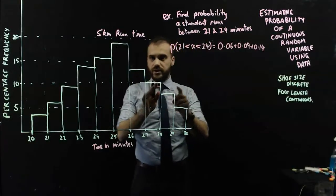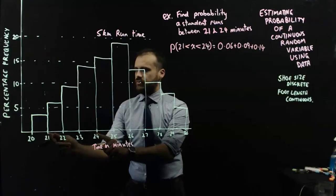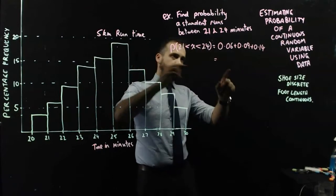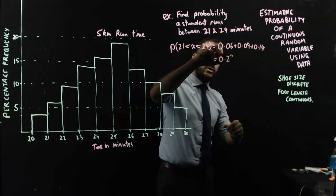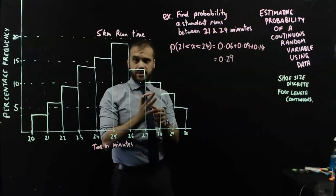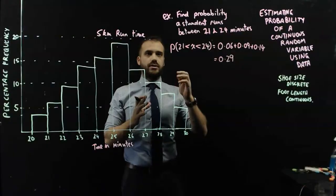Okay, so I'm finding the probability between 21 and 24, which is between here and here, 21 and 24. This one plus this one plus this one equals a number 0.29. There is a 29% chance that a randomly selected student can run between 21 and 24 minutes.